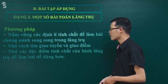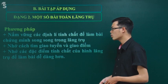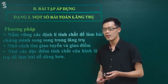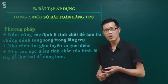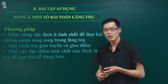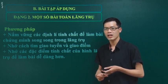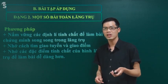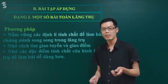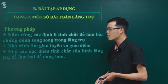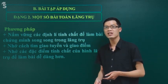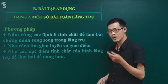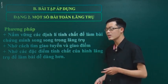Cuối cùng, em phải nhớ được các đặc điểm tính chất của các hình lăng trụ: lăng trụ tam giác, lăng trụ tứ giác. Ví dụ như là hai mặt đáy song song và bằng nhau, các cạnh bên cũng song song và bằng nhau, các mặt bên của hình lăng trụ là hình bình hành. Nhớ các tính chất đó khi làm bài thì chúng ta dễ dàng hơn.